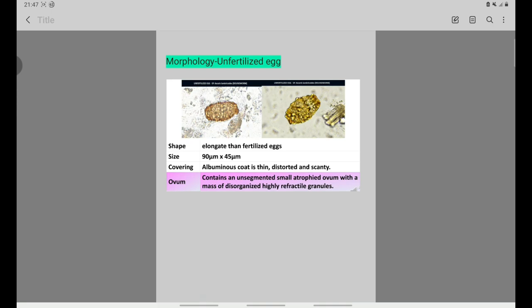Unfertilized eggs are elongated with size 90 by 45 micrometers. The coverings are distorted and scanty, with a disorganized highly refractile granular mass.